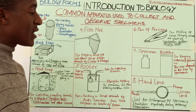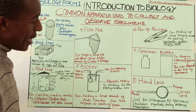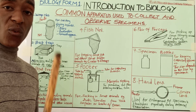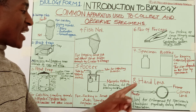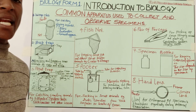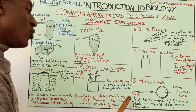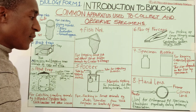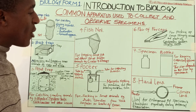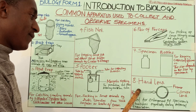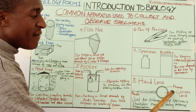Finally, number eight is what we call the hand lens. There are apparatus not used for collection but for observation. The hand lens is used for observation or enlargement of specimens so that you can see their structures properly. Looking at the parts of a hand lens, we have a handle, a frame, and ultimately the convex lens.